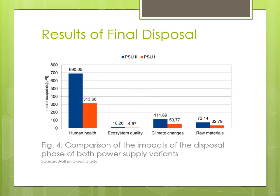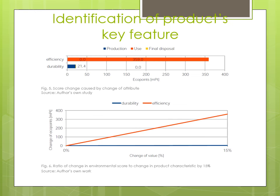Hence, the scores for variant 2 turn out to be higher for each category of damage. In the analysis of the disposal scores, the impacts affecting human health are by far the dominant, reaching scores more than six times higher than the climate change category, which reached the second-highest impact score. The analysis of the life cycle of two versions of computer power supplies allowed to obtain a lot of detailed information about their interaction with the environment at all stages of their life cycle.